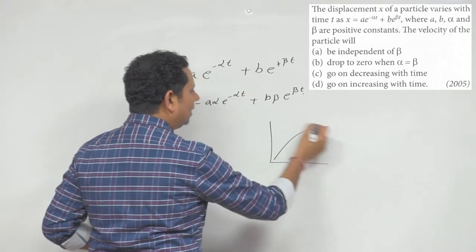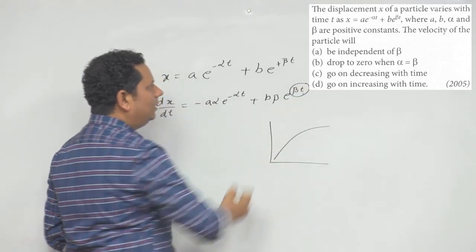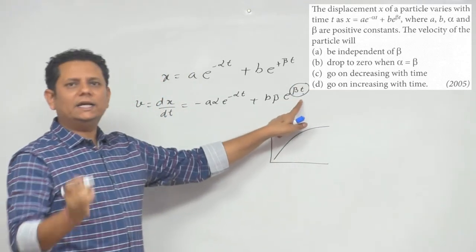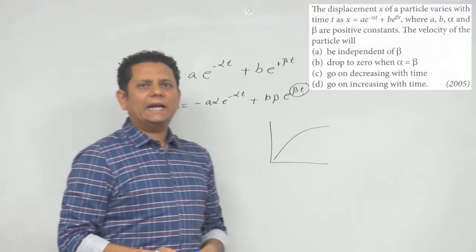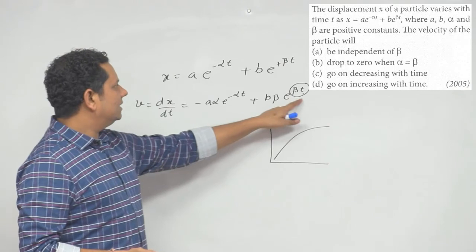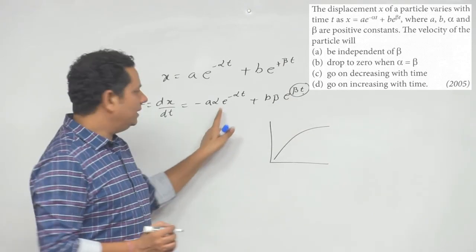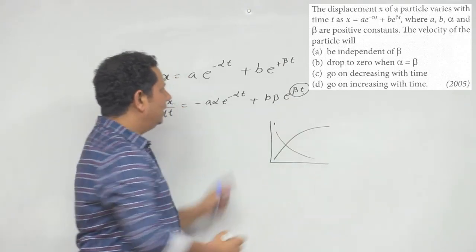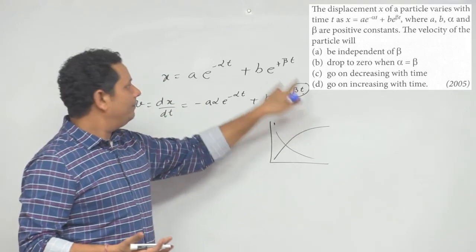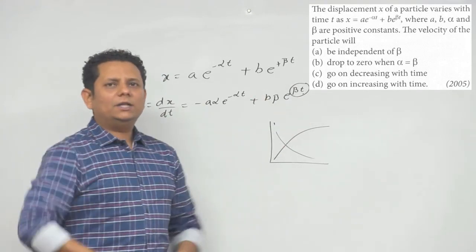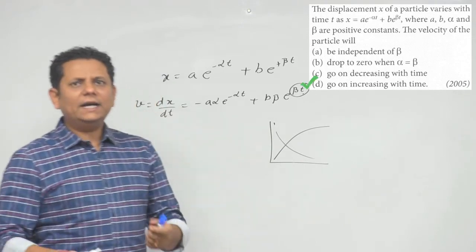यह आपकी velocity हर वक्त बढ़ती रहेगी because e to the power plus beta t हमेशा increase करता रहेगा। तो option number d would be the right answer - go on increasing with time। जैसे यह time बढ़ेगा, यह value कम हो रही है, यह value exponentially decrease होगी, लेकिन यह वाली value exponentially rise करेगी। इन दोनों का addition will keep on increasing.